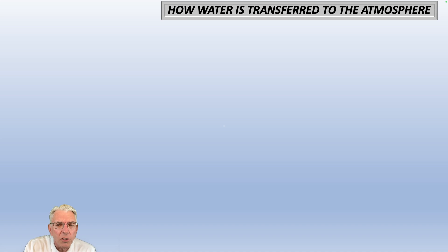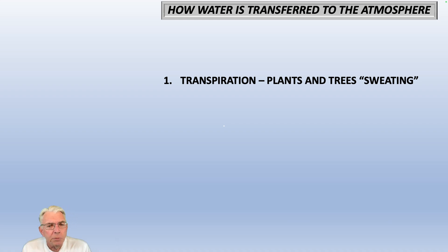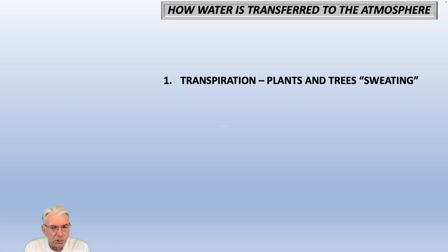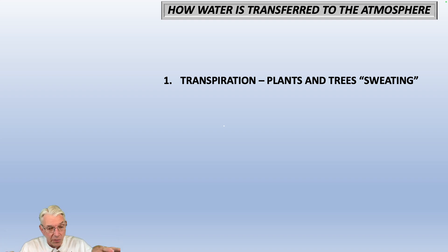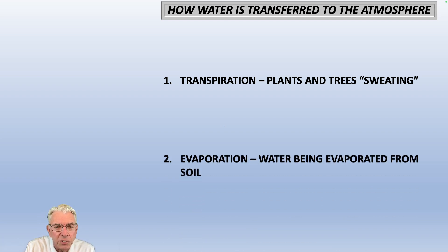So this is how water basically is transferred from the soil and also from plants into the atmosphere. Transpiration is the plants and the trees basically sweating, if you will. Basically water coming up from the soil, up through the plants and trees, and then getting out to the leaves and then evaporating off of the leaves — that's what's called transpiration. It's basically a slang way of saying that the plants and the trees are sweating.